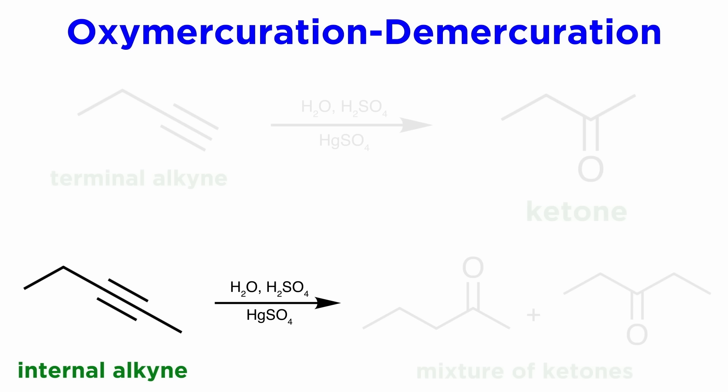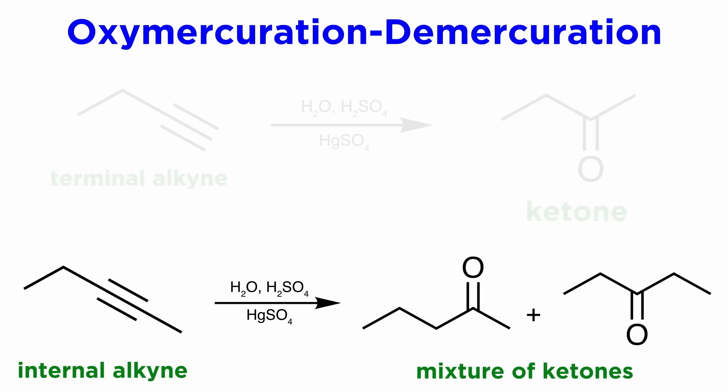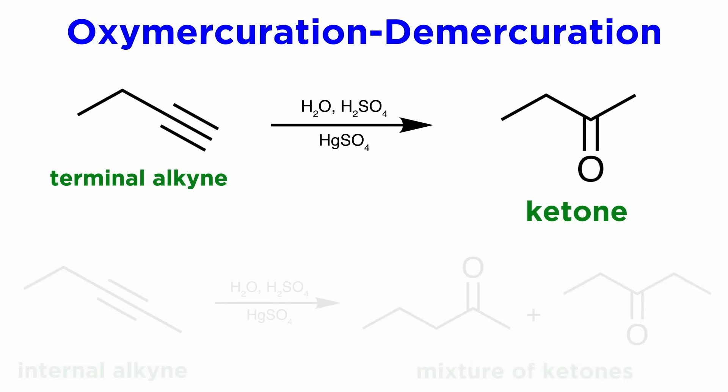It is important to note that in situations where both carbons in the triple bond are secondary carbons — which will be the case for any internal alkyne — there will be a mixture of products, as neither carbon will be preferred as the site of the carbocation in the intermediate. Therefore this technique is preferred for terminal alkynes, since the regiochemistry can then be easily controlled.